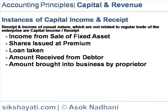Shares issued at a premium: proceeds received on issue of shares of face value of Rs. 2 lakh at a premium of Rs. 60,000. The amount received on issue of shares — the face value — is treated as capital received, i.e., Rs. 2 lakh, and the premium received, i.e., Rs. 60,000, is treated as capital profit, as the amount received is not from regular business operations.